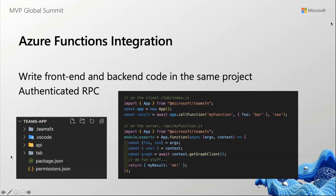Azure functions are integrated, and we give it to you in a monorepo format where your tab is sitting right next to your Azure function. This allows you to share code if you want to. Here's an example of what it's like to take advantage of single-line Graph integration directly from the Azure function.